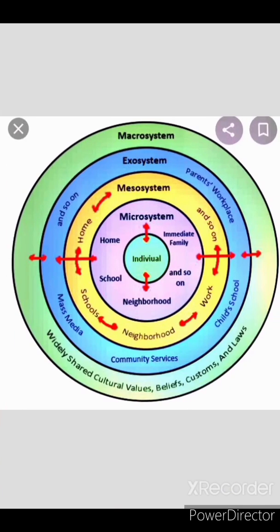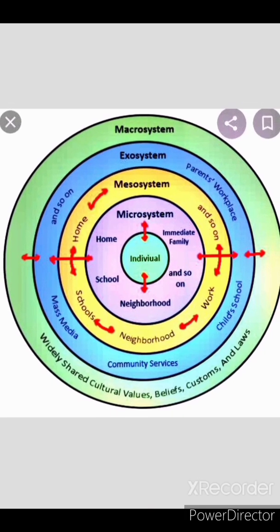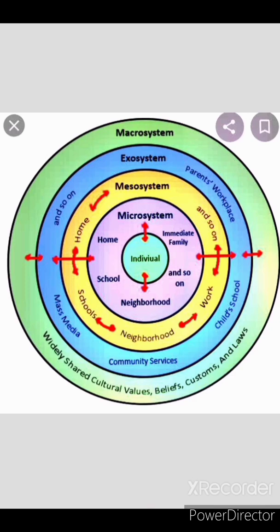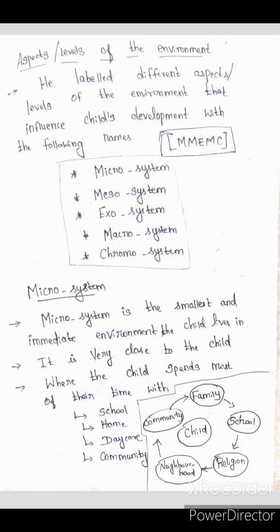The environment is split into these levels: Microsystem, Mesosystem, Exosystem, Macrosystem, and Chronosystem. The first level is the Microsystem — this is closest to the child. The Microsystem includes the home, school, neighborhood, and immediate family. It is the small, immediate environment the child lives in and is very close and interactive with the child.